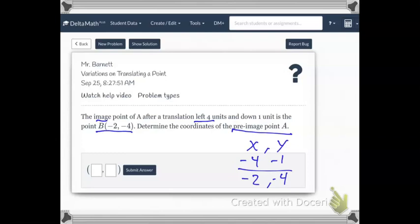Okay. So something minus 4 equals negative 2. Okay. Well, that's easy enough. That would just go backwards. Negative 2 plus 4 would be positive 2. Something minus 1 equals negative 4. So we just go backwards. Negative 4 plus 1 equals negative 3. Put my parentheses around it. And this is my pre-image.